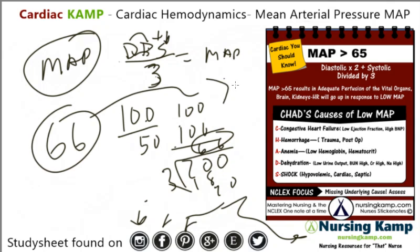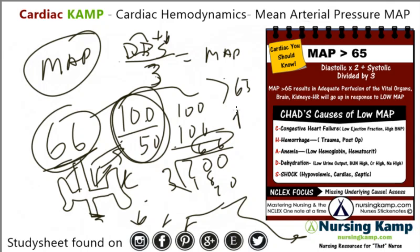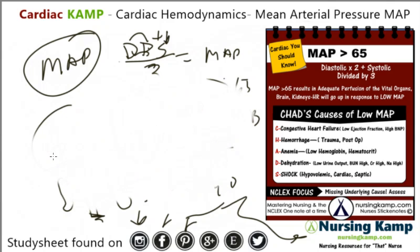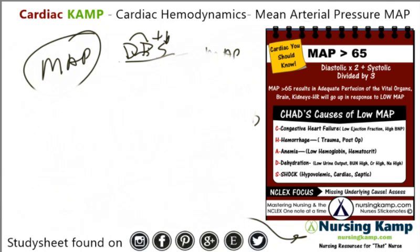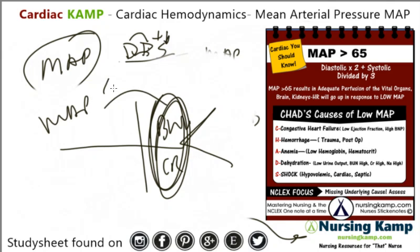What we want the MAP to be is greater than 65. So if it's 66, though this blood pressure seems low, that means they're going to perfuse their kidneys and will have urinary output. Your mean arterial pressure needs to be at least 65 for perfusion to the kidneys. If it's not, then the BUN and creatinine will be elevated, which is a sign of renal problems. So if the BUN and creatinine are elevated, a mean arterial pressure less than 65 could be the problem.